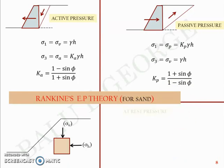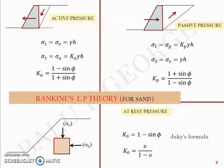For the at-rest pressure case, K0 is defined as 1 − sin φ, where φ is the angle of internal friction. This is called Jaky's formula. K0 is also defined as μ / (1 − μ), where μ is Poisson's ratio.